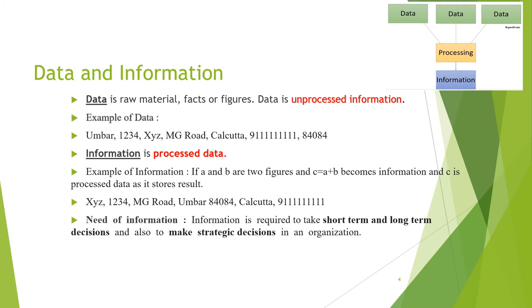For example, 'umbar1234xyz' is a raw material with no processing done on it, so it is called unprocessed information. Data is nothing but unprocessed information. Information, on the other hand, is processed data — when processing is done on the data.